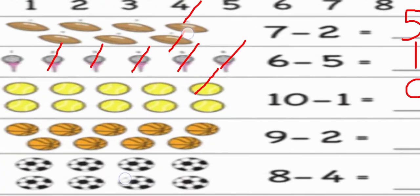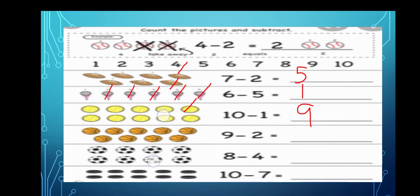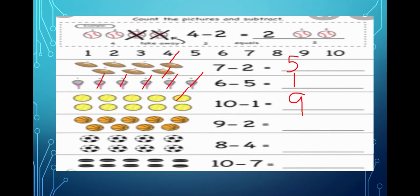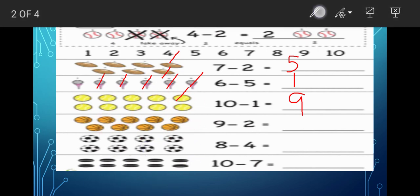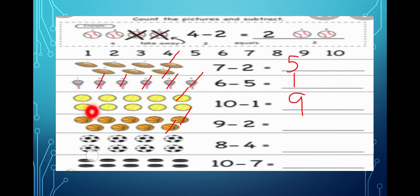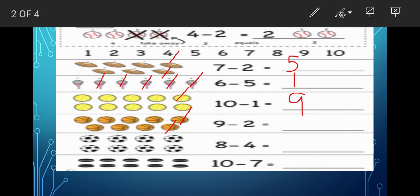The next picture is about a bowl. So how many? Nine bowls are there. Out of that we have to cross out two — that means nine minus two. Two bowls you have to cross out. We have cut two and the remaining is how much? Seven.